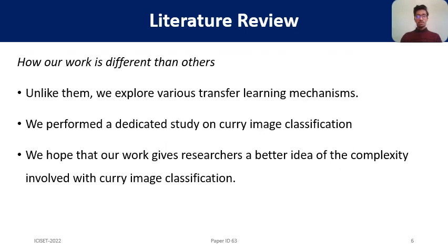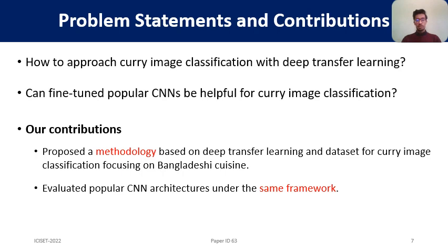Our work is different from others in the following ways. One, unlike them, we explore various transfer learning mechanisms. Two, we performed a dedicated study on curry image classification. Three, our work may be useful for researchers for getting a better idea of the complexity involved with curry image classification. In this work, we approach the following problems: how to approach curry image classification with deep transfer learning, and can fine-tuned popular CNNs be helpful for curry image classification?